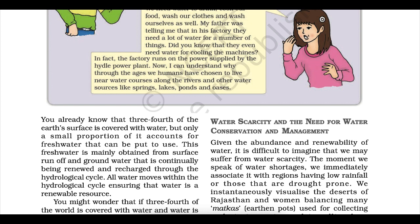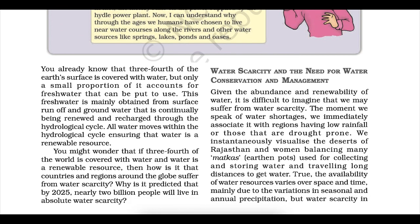Now I can understand why through the ages we humans have chosen to live near water courses — along the rivers and other water sources like springs, lakes, ponds and oases. You already know that three-fourths of the earth's surface is covered with water, but only a small proportion of it accounts for fresh water that can be put to use. This fresh water is mainly obtained from surface runoff and groundwater that is continually being renewed and recharged through the hydrological cycle.